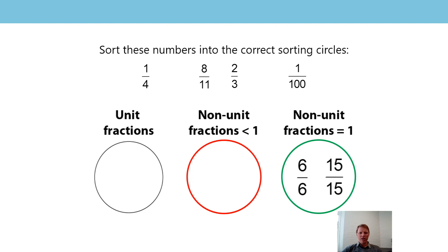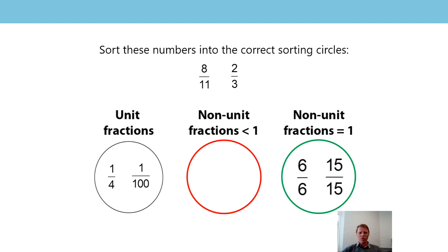Let's now think about unit fractions. A unit fraction is where the numerator was 1. Out of those fractions, which have a numerator of 1? 1 quarter and 1 hundredth - so they are both unit fractions. That means the two fractions left are non-unit fractions that are less than 1. Are the numerators the same as the denominators? No. Is the numerator 1? No. So they're definitely non-unit fractions, and that means they have a value less than 1, which means on our number line they would come before 1 - so both of those fractions go into our red circle.